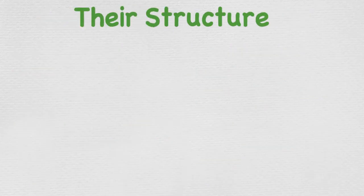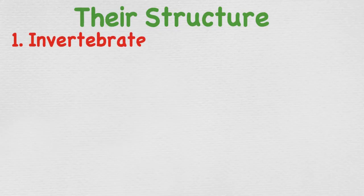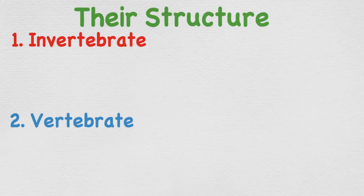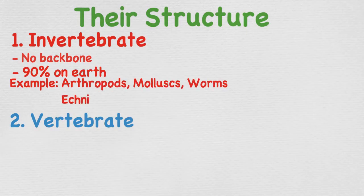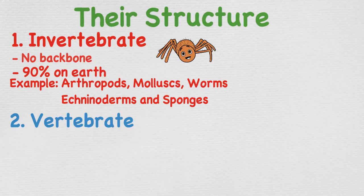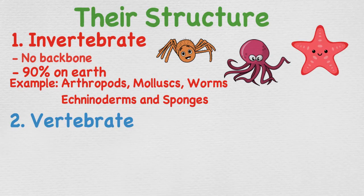The last category used to classify animals is their structure — specifically whether they are invertebrate or vertebrate. Invertebrates are animals that do not have a backbone. Over 90% of animals on Earth fall within this category. Some examples are arthropods such as spiders and butterflies, mollusks such as octopus and snails, worms, echinoderms like starfish, and sponges.